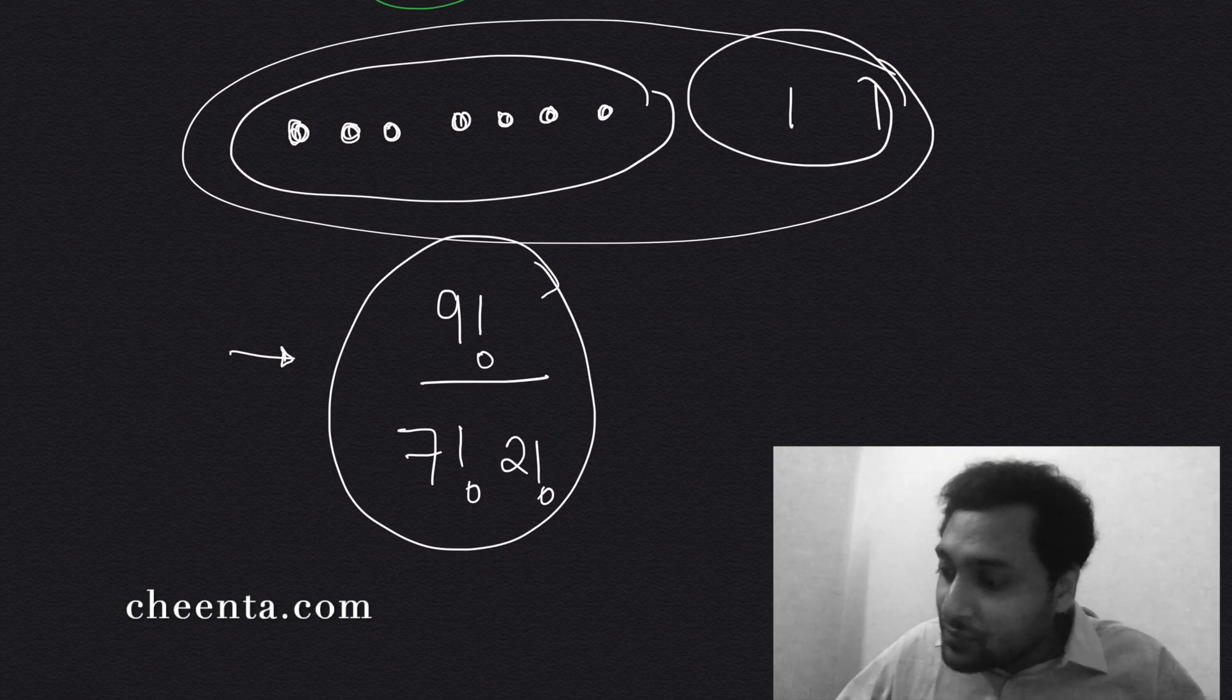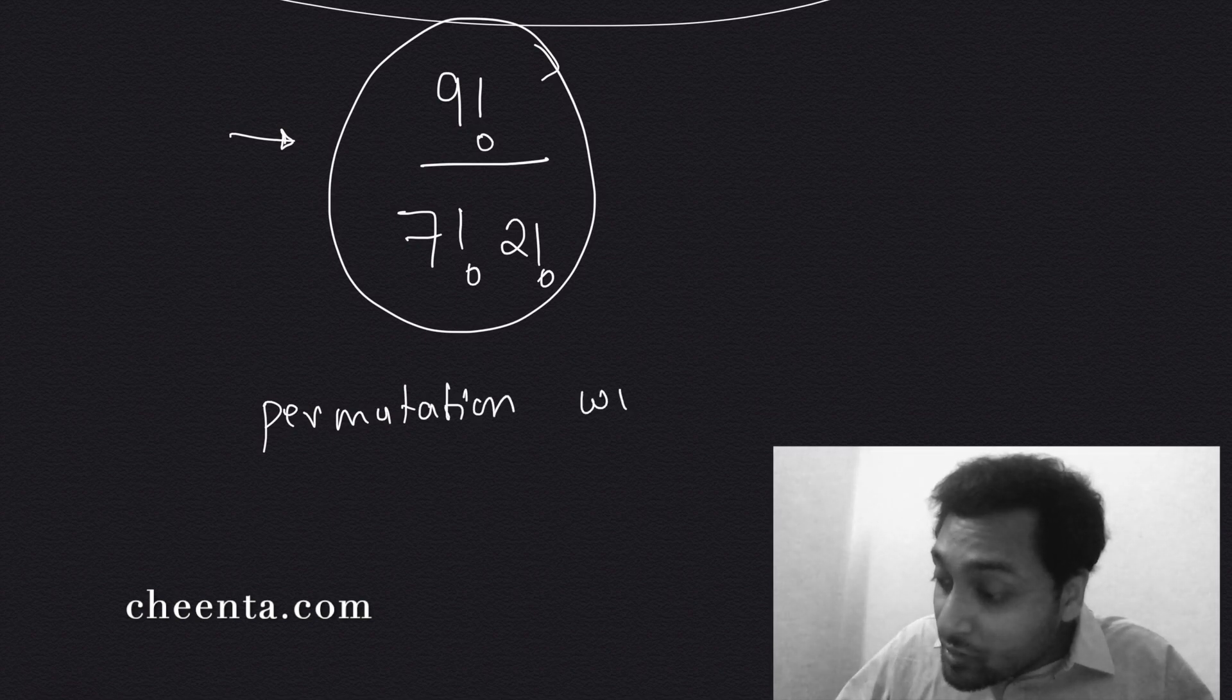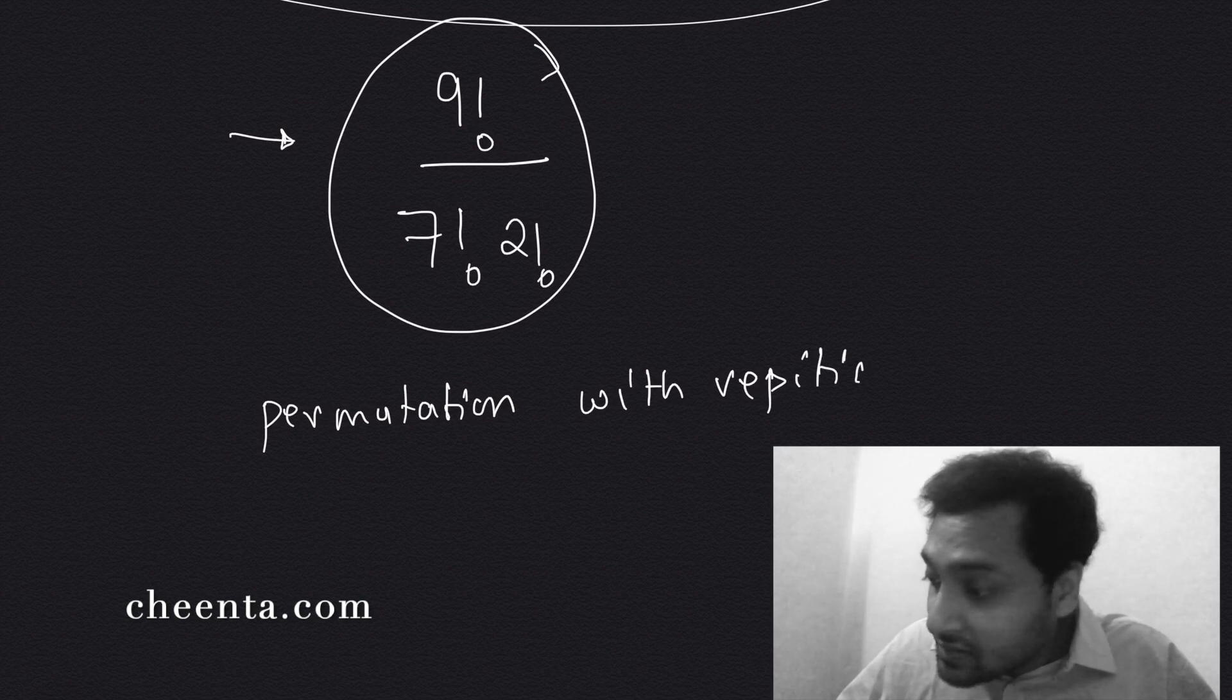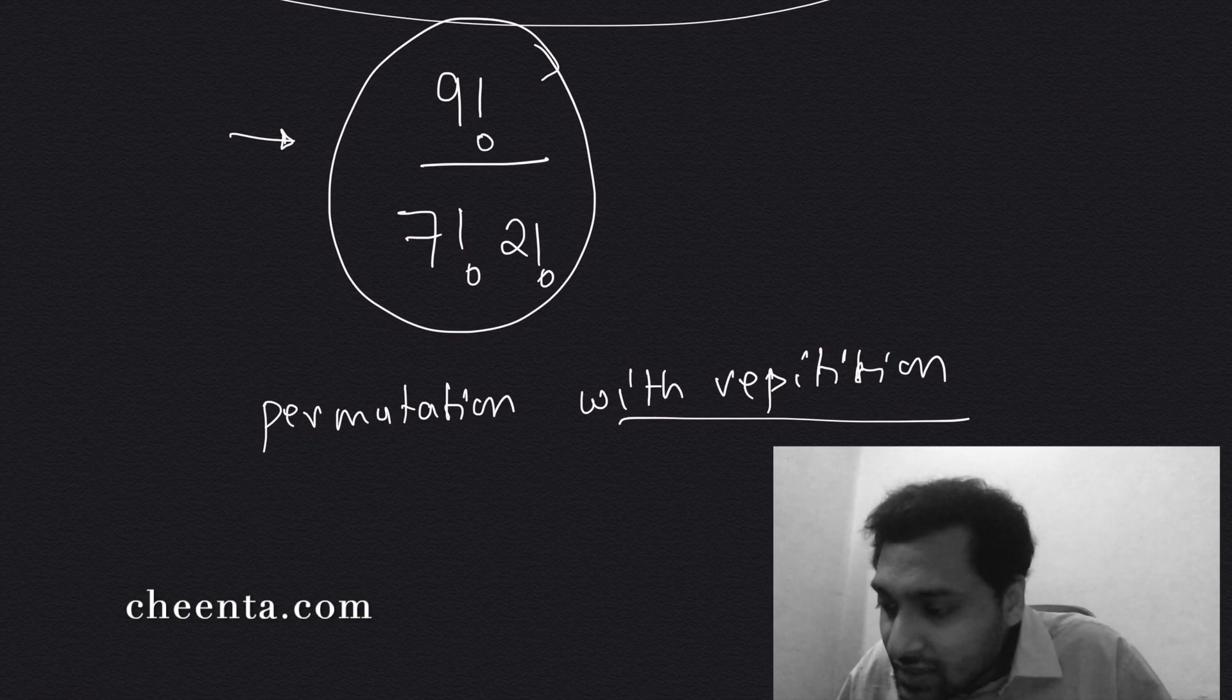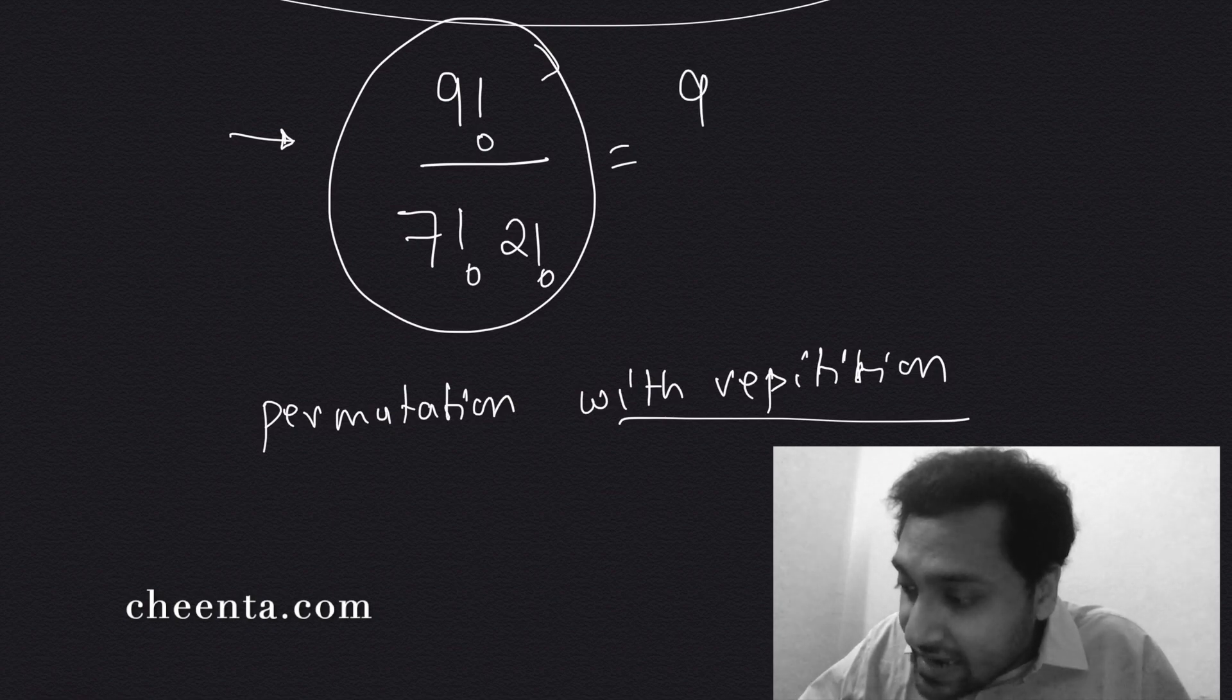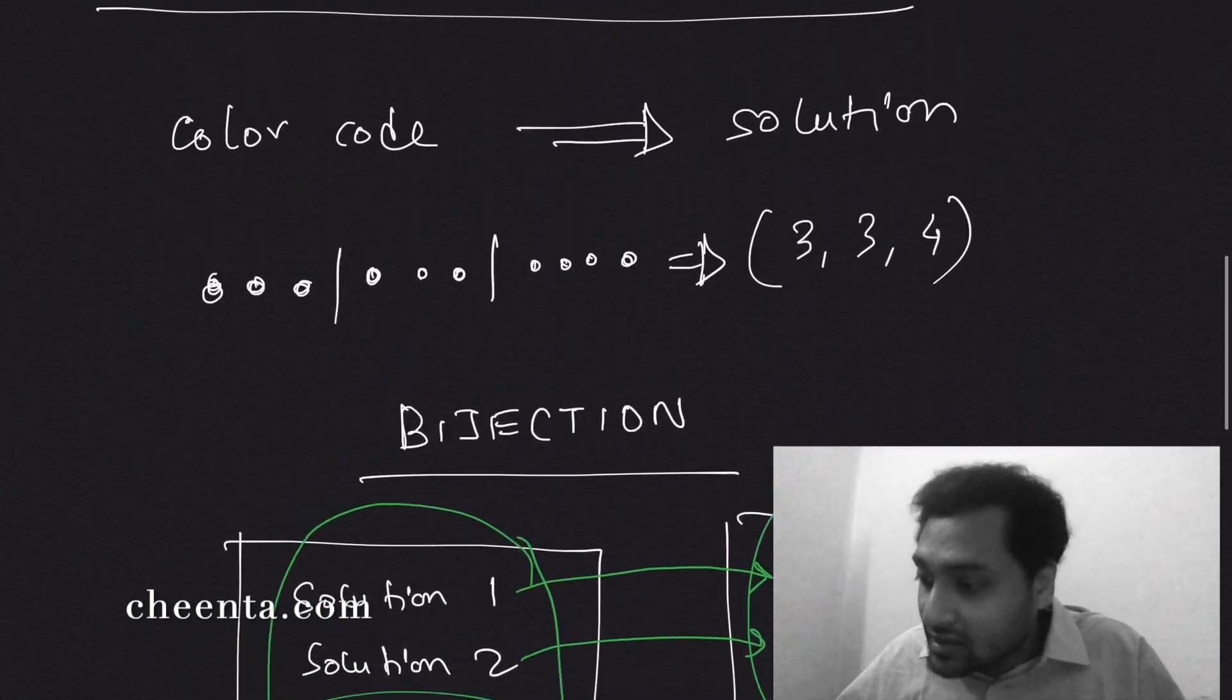So if you are confused about what happened right here, this is something related to permutation or rearrangement with repetition. This is also discussed in our combinatorics module. Permutation with repetition is very important. And this is also sometimes written as 9C2. So this is 9 times 8 by 2. So the answer is 36.